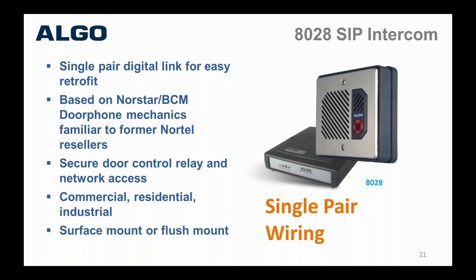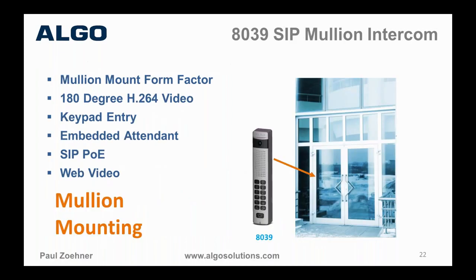This is the only product in our SIP lineup that is not POE — the reason is we get an earth ground through the power supply, which provides lightning protection when the intercom is beyond the building perimeter. You're not limited to the 100-meter reach to the nearest network switch. It's well-adapted to retrofit applications. Secure door control is in the control unit, not in the intercom, and you don't have to provide internet access on the outside of the building — someone can tamper with the intercom but won't reach the network or unlock the door.